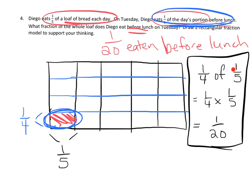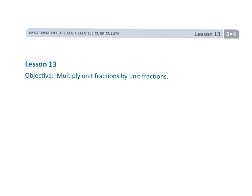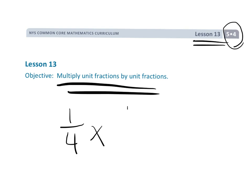One-fourth of one-fifth is appropriate here because Diego eats one-fourth of his one-fifth before lunch. Teachers and parents: don't get too caught up if students write it as one-fifth of one-fourth and have it backwards. Multiplication is commutative, so it doesn't matter — if we can get them to write it in the proper order based on vocabulary that's great, but it's not a hill to die on. They'll still get the same answer. That wraps up grade 5 module 4 lesson 13: multiplying unit fractions by unit fractions.